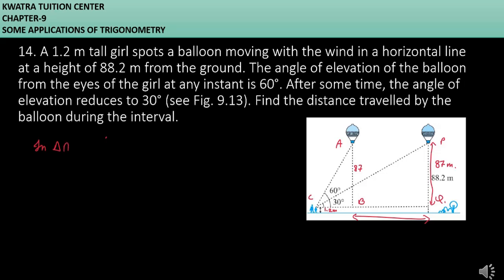First of all, in triangle ABC, you have to use tan 60. Angle is 60 because tan 60 equals perpendicular over base, which is 87 over CB. The value of tan 60 is root 3, so root 3 equals 87 over CB. The value of CB will be 87 over root 3.